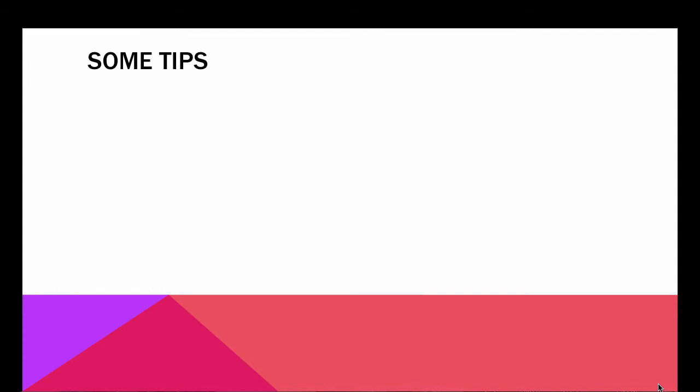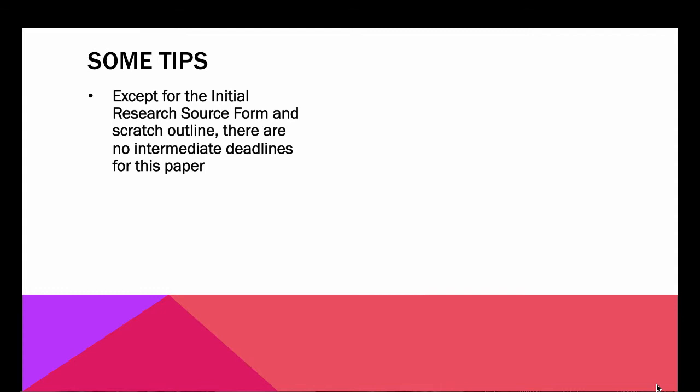Here are some general tips about writing this paper. Except for the initial research source form, which is due on a particular date, and the scratch outline you have to turn in, there aren't any intermediate deadlines for this paper. There's not as much chance that more than one student will be writing on the same topic, so it wouldn't be helpful to have you post summaries. By now I'll assume you know how to annotate sources and find information from them. You'll be turning in an initial research source form and a scratch outline, and that's all until the final paper. I do encourage you to send me drafts and email me with questions as often as you have them.